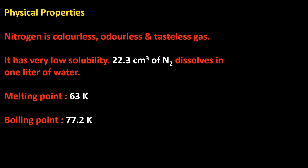Physical properties of nitrogen: Nitrogen is colorless, odorless, and tasteless gas. It has very low solubility — only 22.3 cm³ of nitrogen dissolves in one liter of water. Melting point is 63 Kelvin and boiling point is 77.2 Kelvin.